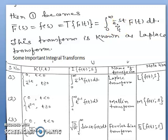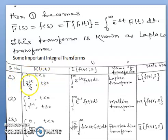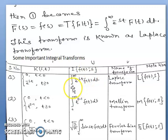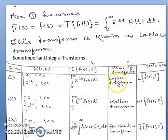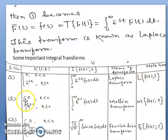The kernel of the Laplace transform is k(s,t) = e^(−st) when t is greater than or equal to 0. The integral I(f; s) = integral from 0 to infinity of e^(−st) f(t) dt is known as the Laplace transform, denoted by L{f(t)} = F(s).